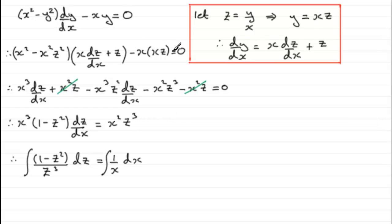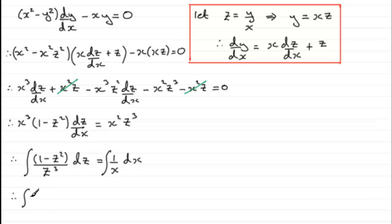With this substitution we've successfully changed the equation into a separable form. You might like to pause the video here and complete the example yourself. Welcome back — here's the next part. We can think of the left side as the integral of z⁻³ minus 1/z with respect to z.